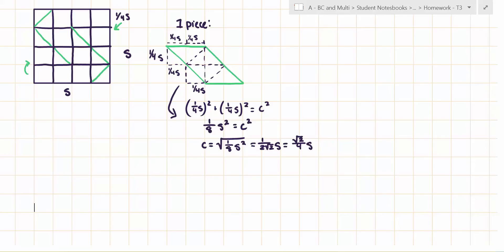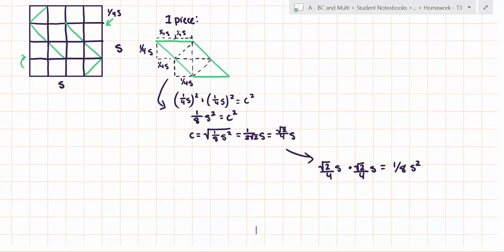And this is the length of one side of the square. Now we're going to square this length because we want the area of the square, and we get 1/8 S².